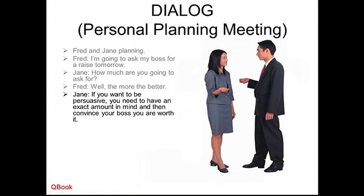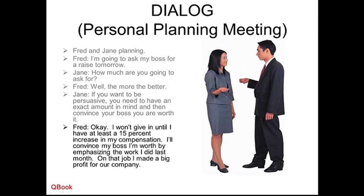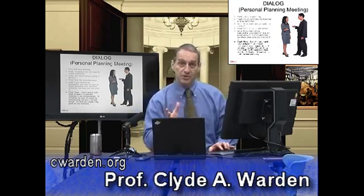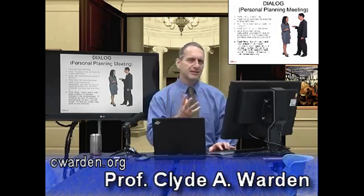If you want to be persuasive, you're going to have to have a number and attach a value to that number. Fred says, 'I won't give in until I have at least a 15% increase in my compensation. I'll convince my boss I'm worth it by emphasizing the work I did last month on that job — I made a big profit for our company.' So Fred sets a specific goal of 15% and values it based on last month's project.